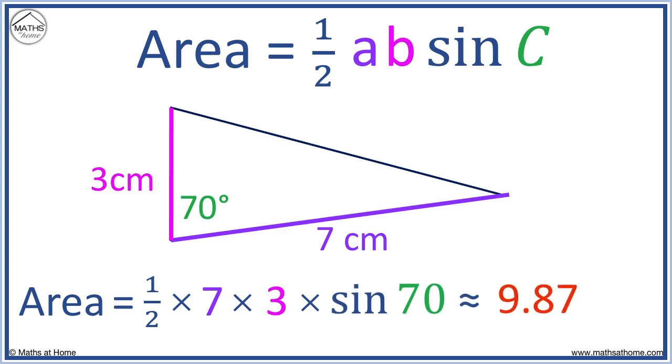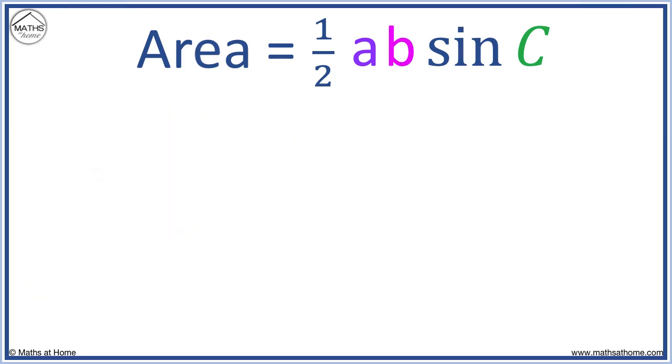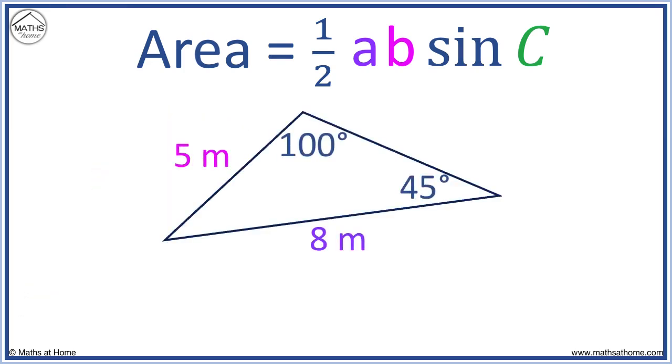Here's another example. Here we know two sides, so a can be 8 meters and b can be 5 meters. However, we need to know the angle between them, which we don't know.